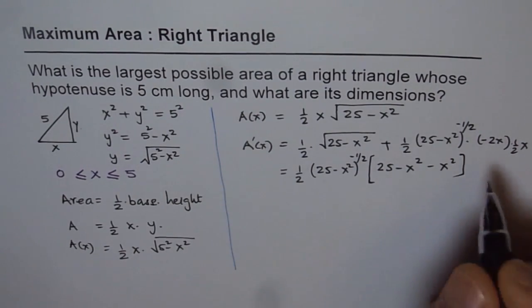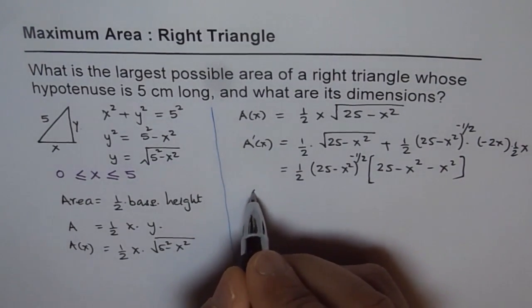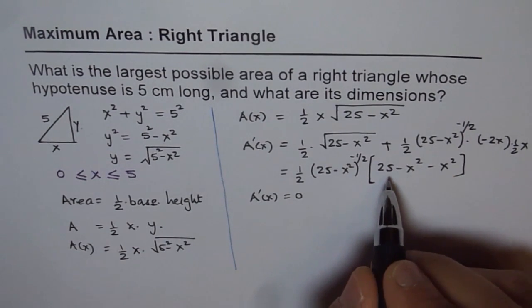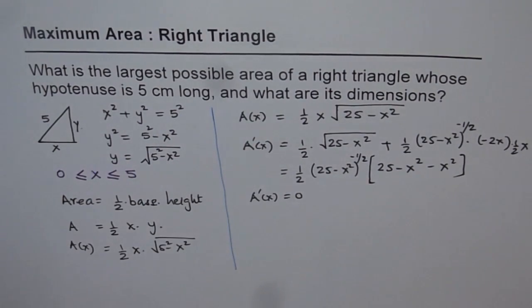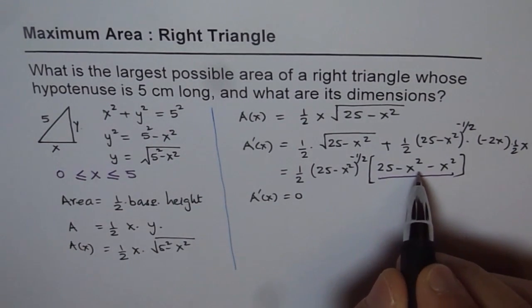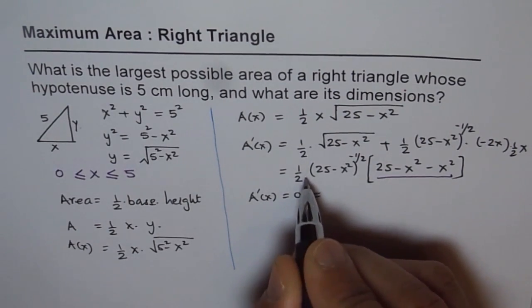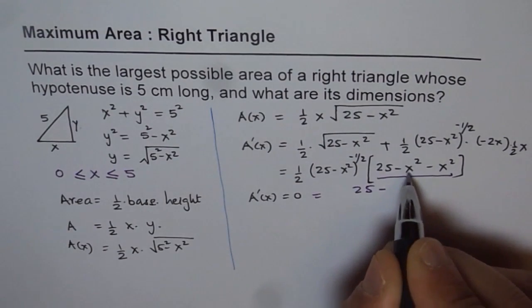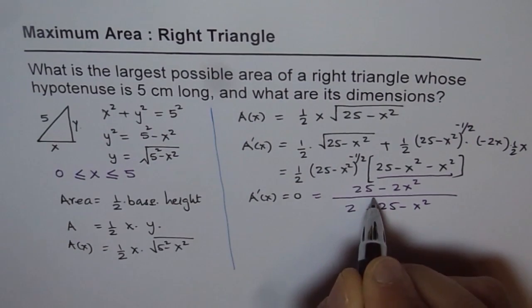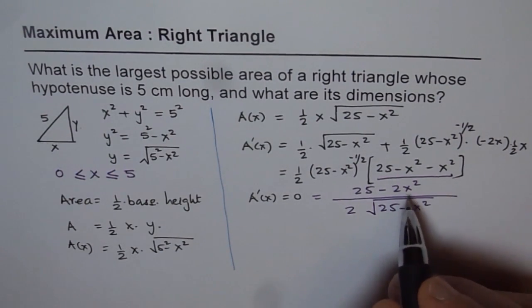So we get minus x squared in the numerator. For finding a critical number, A'(x) should equal 0. Setting A'(x) equals 0, this means the numerator should be 0, since the denominator term (25 minus x squared) is in the denominator. So we rewrite: A'(x) equals (25 minus 2x squared) divided by 2 times the square root of 25 minus x squared. For this to be 0, the numerator must be 0.